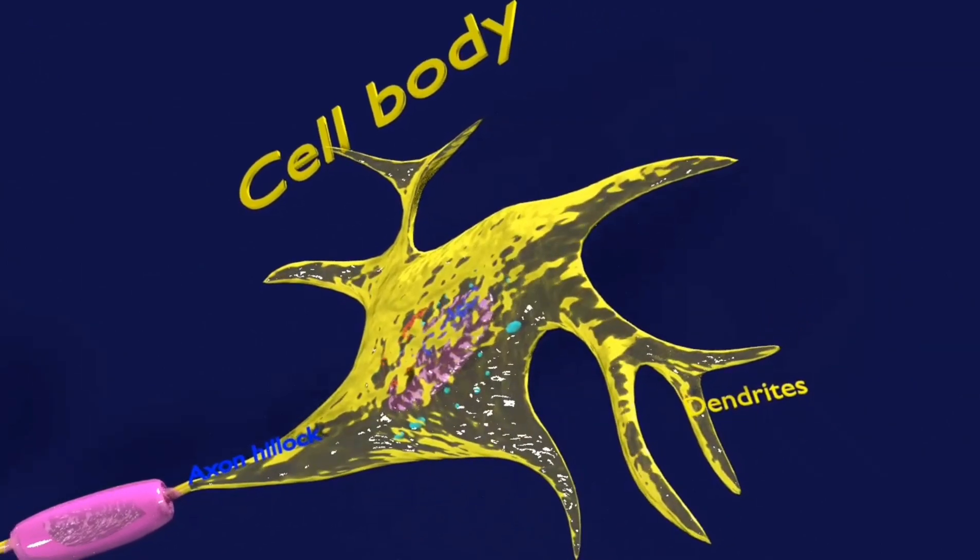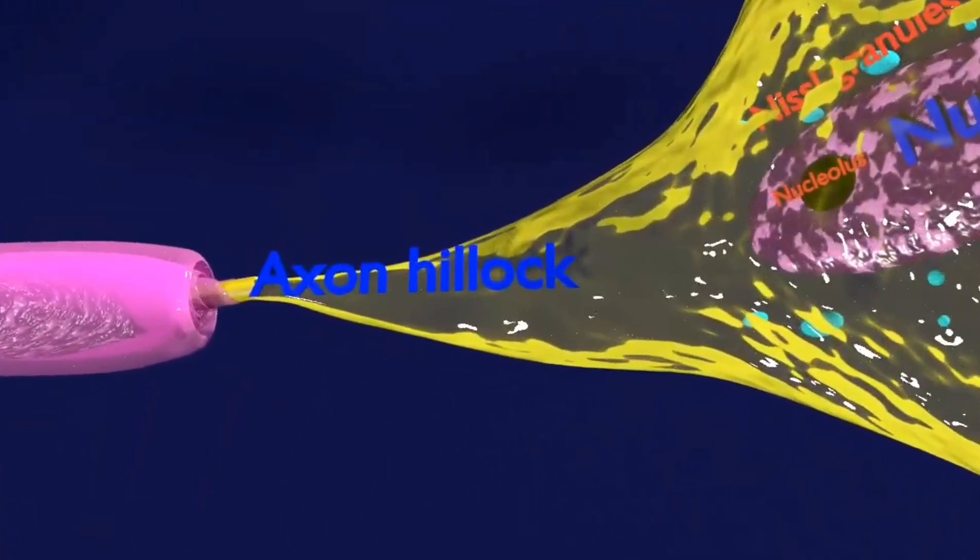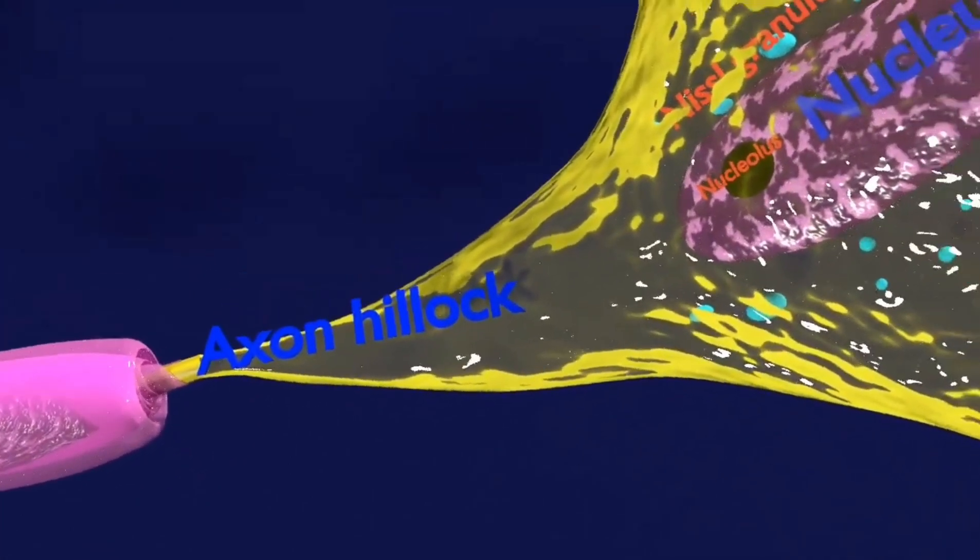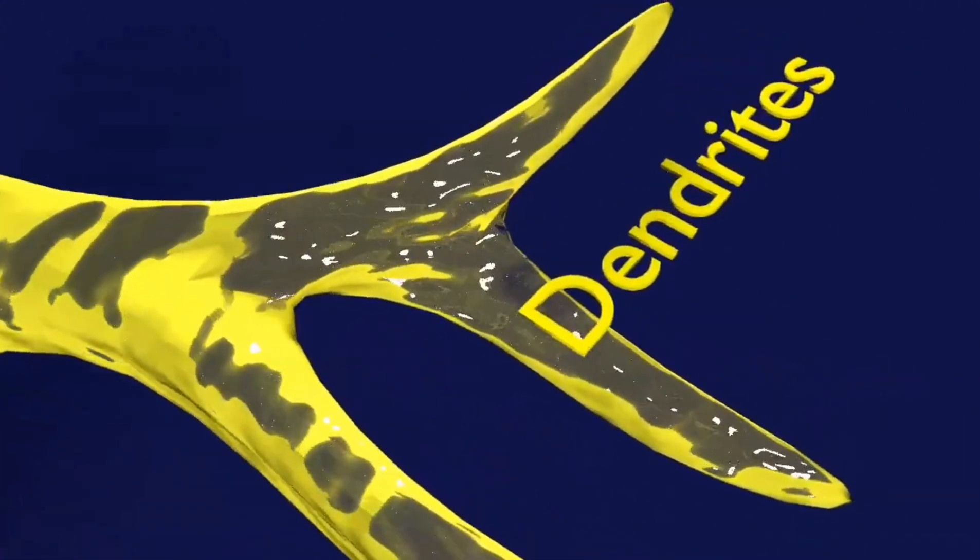A typical neuron consists of a cell body called soma, dendrites, and a single axon. The axon leaves the soma at a swelling called the axon hillock. Most neurons receive many input signals throughout their dendritic trees.